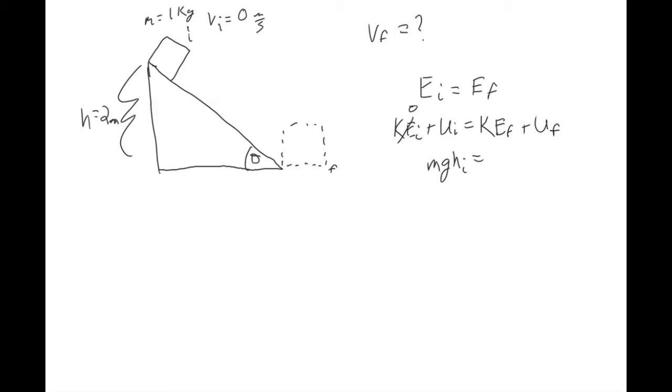And then if we define the bottom of this ramp to be at a height of zero, which we have in our problem, then we know that the final potential energy is zero. Because this was mgh here, maybe I'll write out everything. So one half mv squared initial plus mgh initial equals one half mv final squared plus mgh final.